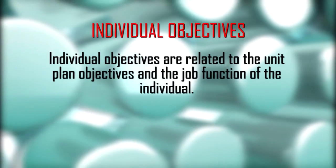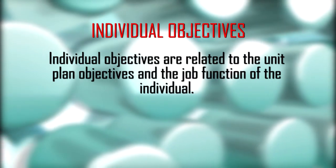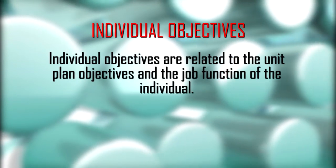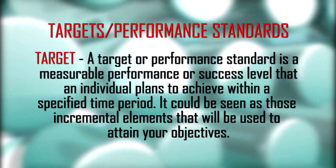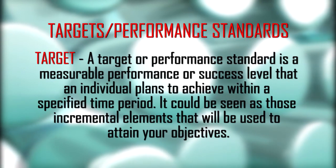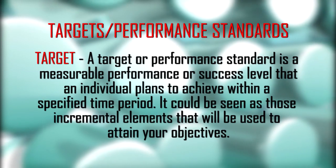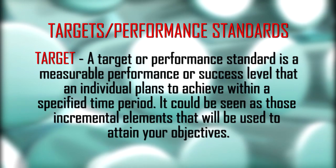They provide a broad picture of a desired goal to be attained. Individual objectives are related to the unit plan objectives and the job function of the individual. Major tasks are those critical functions or activities that must be carried out in order to accomplish the objective. A target or performance standard is a measurable performance or success level that an individual plans to achieve within a specified time period. It could be seen as those incremental elements that will be used to attain your objectives.